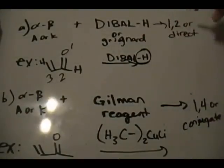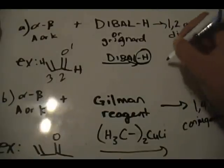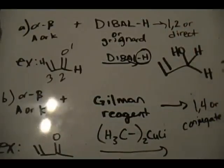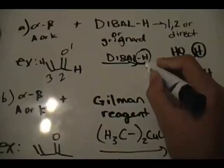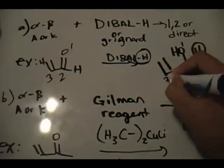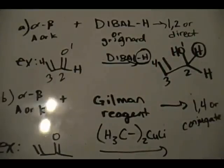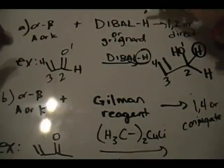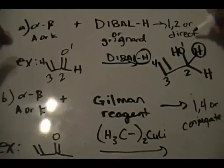Whatever nucleophile or reagent you're using, that group is going to be on position number 2. We can do the same thing with the Grignard reagent — it would be the R group that replaces the H. So: alpha-beta unsaturated aldehyde or ketone with DIBAL-H or Grignard gives 1,2 addition, also known as direct addition.